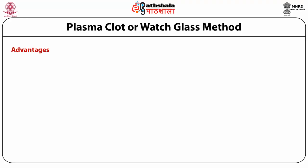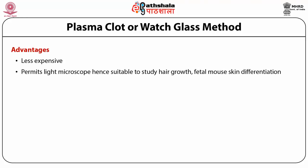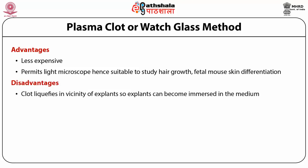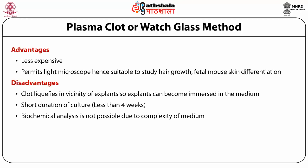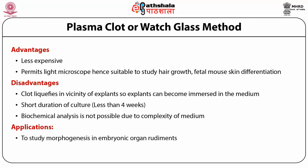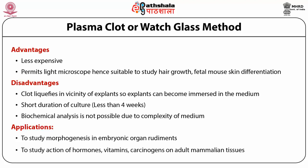Advantages of the plasma clot method: it is less expensive, permits light microscopy, and is suitable to study hair growth and fetal mouth skin differentiation. Disadvantages: the clot liquefies in the vicinity of the explant so the explant can become immersed in medium; culture duration is short, less than 4 weeks; and biochemical analysis is not possible due to the complexity of the medium. Applications include studying morphogenesis in embryonic organ rudiments and the action of hormones, vitamins, and carcinogens on adult mammalian tissues.